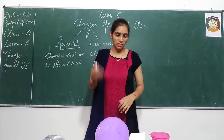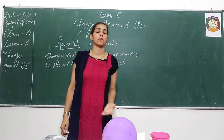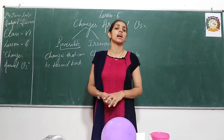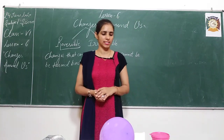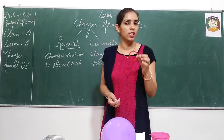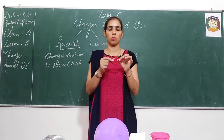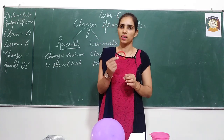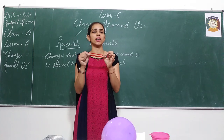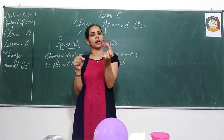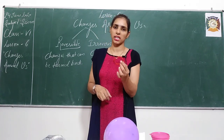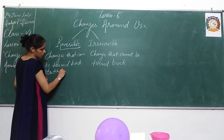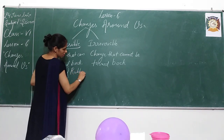There must be something going in your mind that ma'am, what kind of changes are there? Can you give some examples of those that are reversible and irreversible? Yes, we are having a number of examples related to our daily life. For example, suppose I am having this rubber band, and I am just going to stretch this rubber band. What will happen? After stretching, when I release the rubber band, it will come back to its original shape. That means this change can be turned back — that is called a reversible change. So the first example of reversible change is stretching of rubber band.